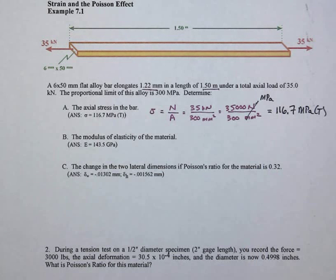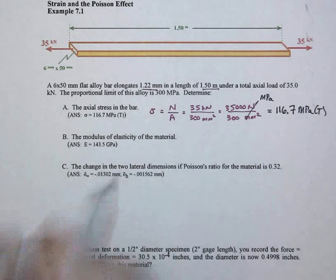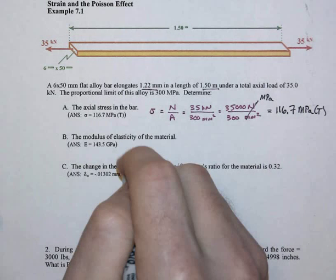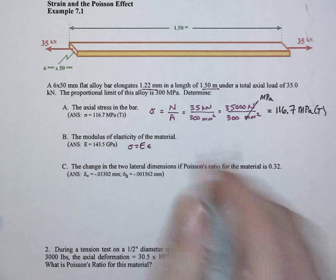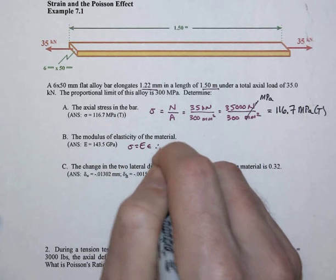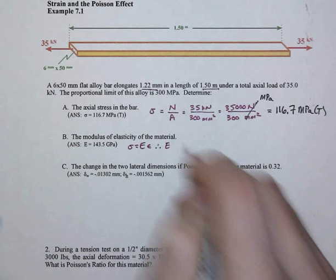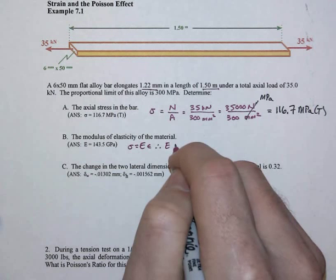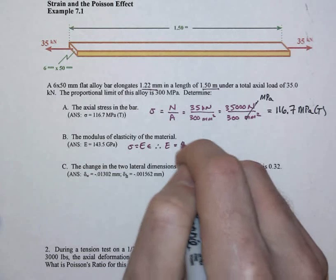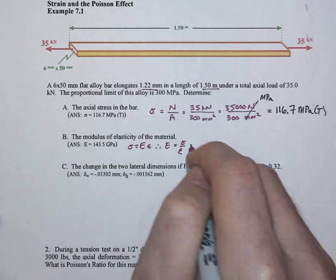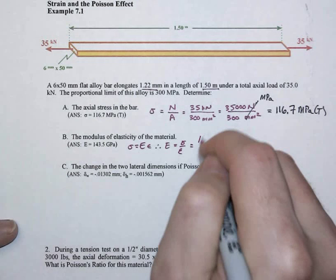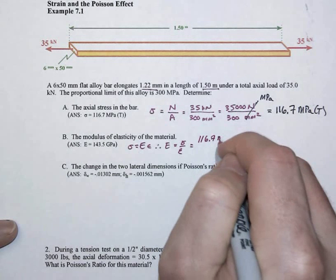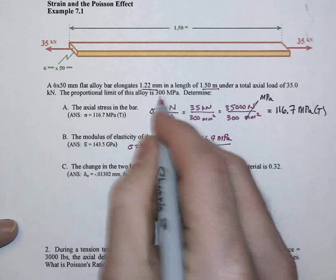We get the modulus of elasticity of the material by going back to Hooke's law, where sigma equals E times epsilon. So that means our calculated value for our modulus of elasticity is the stress divided by the associated strain. We just calculated the stress at 116.7 megapascals, but we've yet to calculate what the strain is.